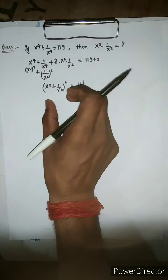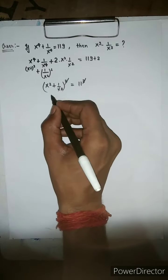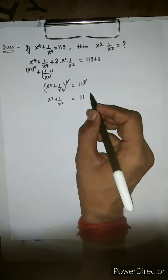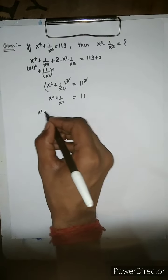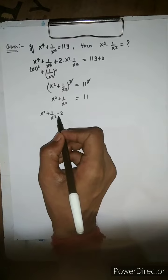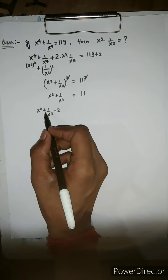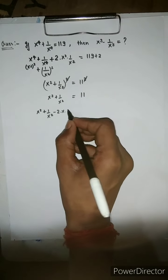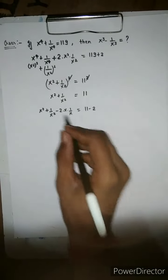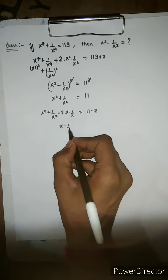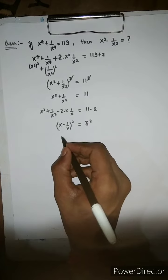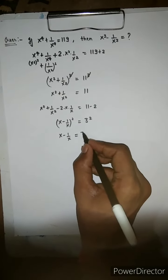We have squares on both sides, so we cancel the square and get x² plus 1 over x² equals 11. Now subtracting 2 from both sides gives x² plus 1/x² minus 2. The main purpose of subtracting 2 is to make it the whole square of x minus 1 over x. We multiply and divide by x, so on subtracting 2 we get 11 minus 2 equals 9. This can be written as x minus 1 over x whole squared equals 9, which is the square of 3. So x minus 1 over x equals 3.